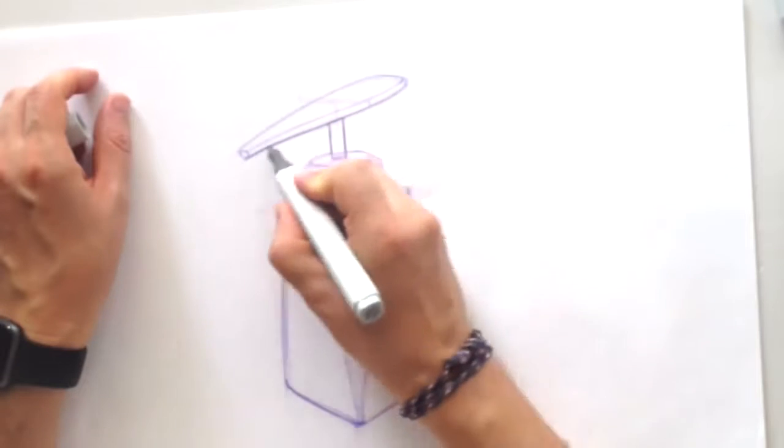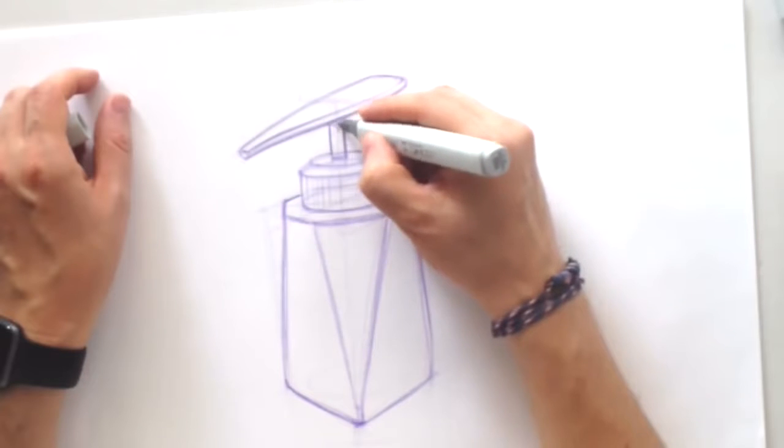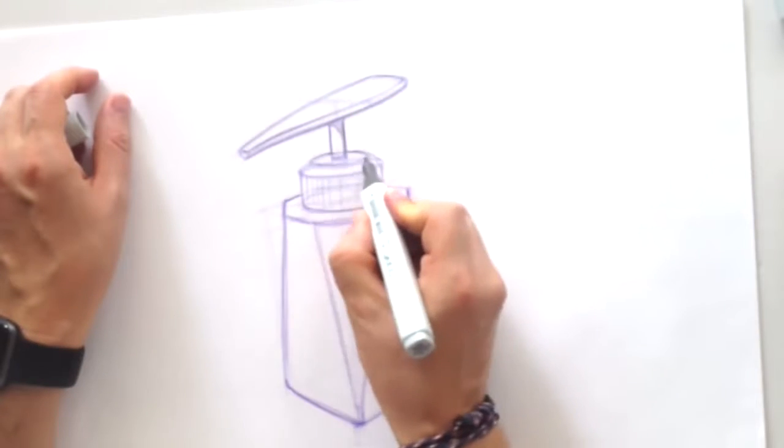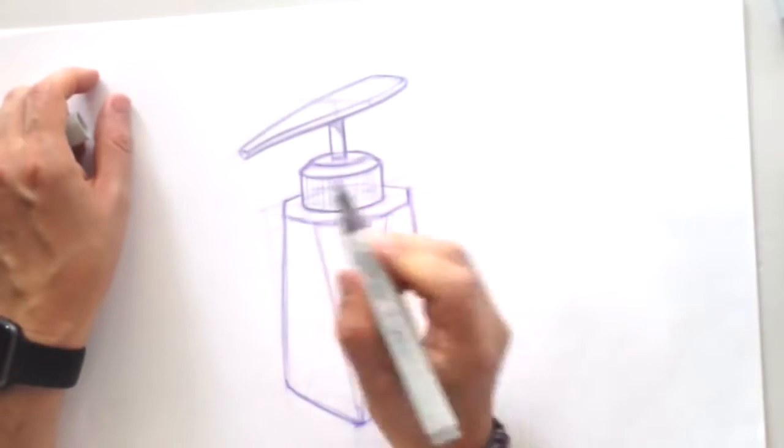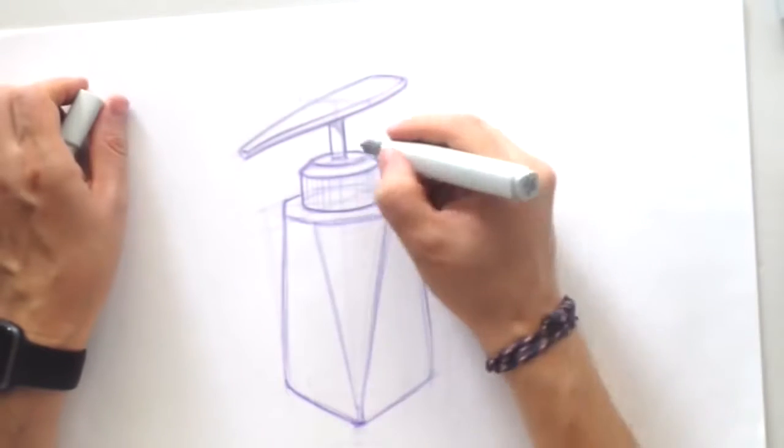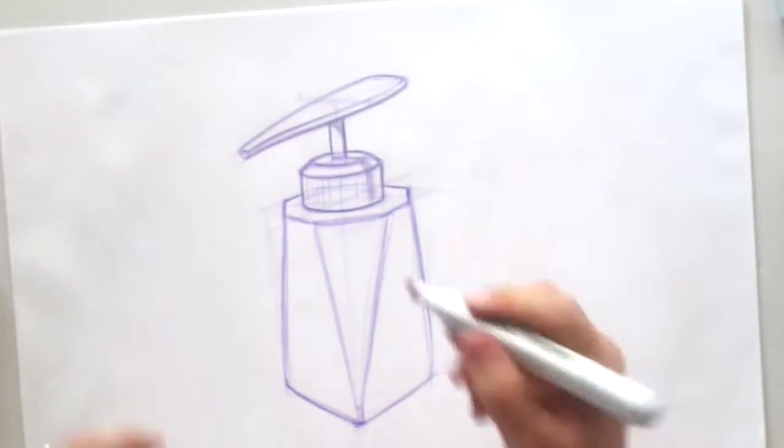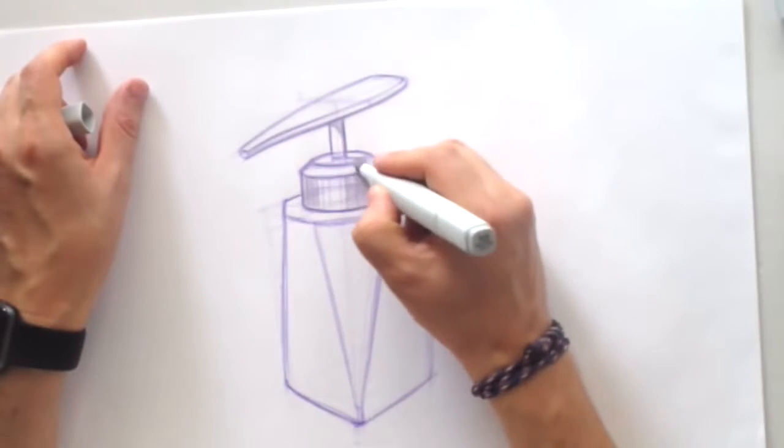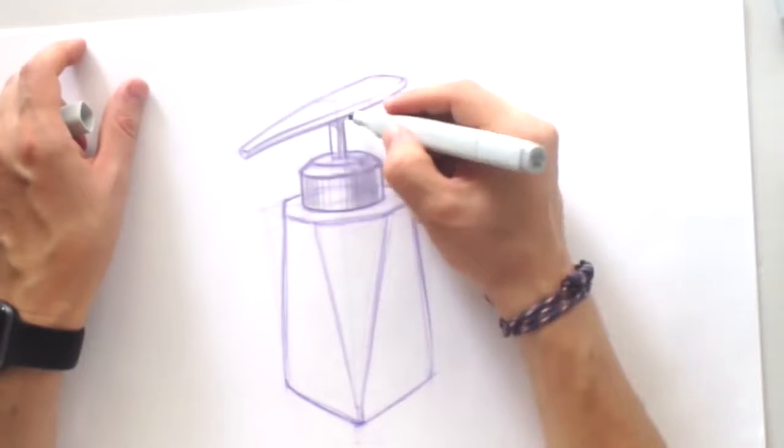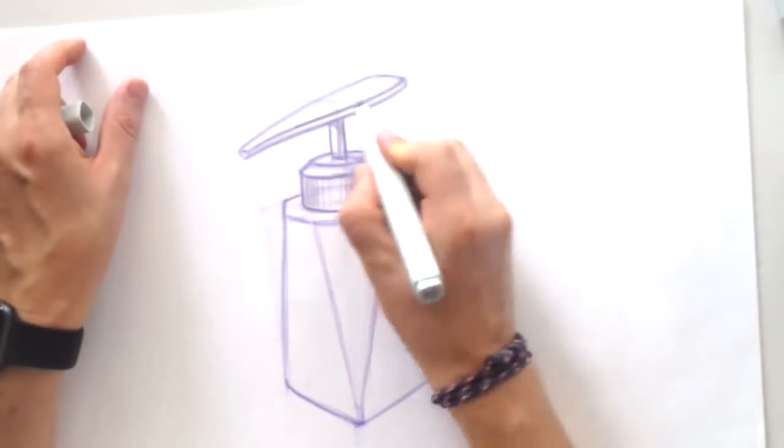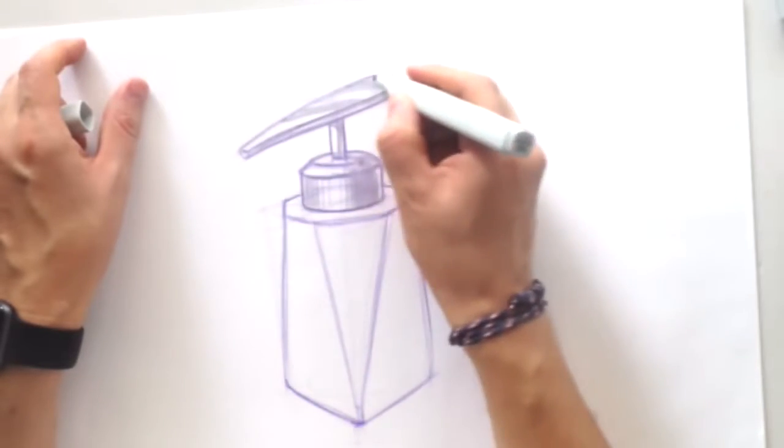Now let's start to make clearer lines. Here I'm using the Copic marker, the thin part of the marker. To adjust those lines I'm using the cool tone of the Copic marker, something around number four grey tone, just to put the initial shapes and shading like this.